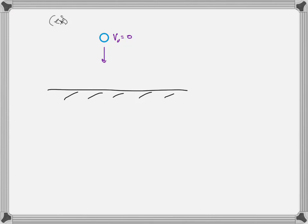Now think about what happens during the collision with the ground. Think about the energy and momentum conservation processes that are going on. When the ball reaches the ground, it is going its fastest — let's call that V final, this velocity when it reaches the ground. When it hits the ground, at some point during the collision, it comes to a stop at some intermediate point, and then it turns around and goes back up.